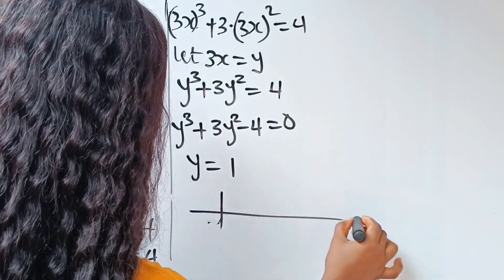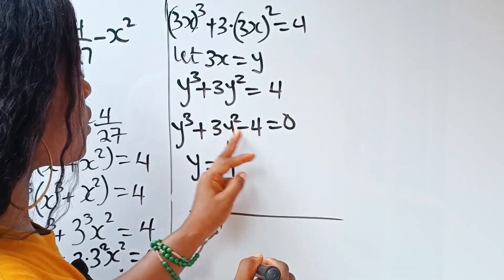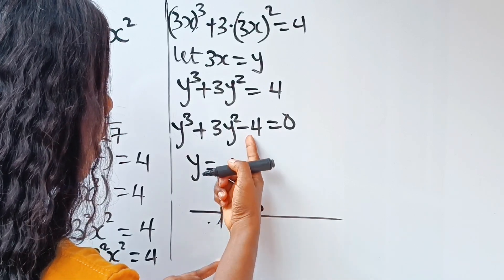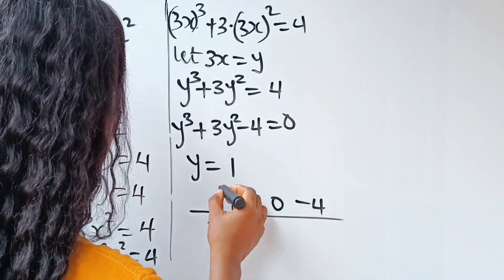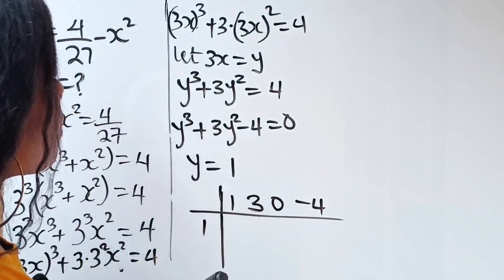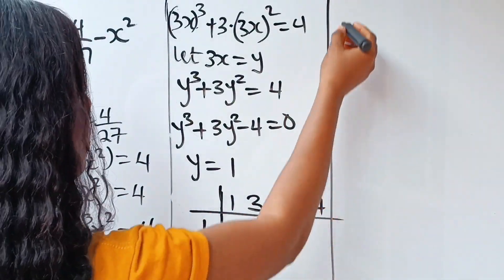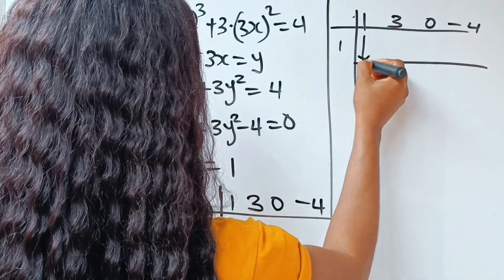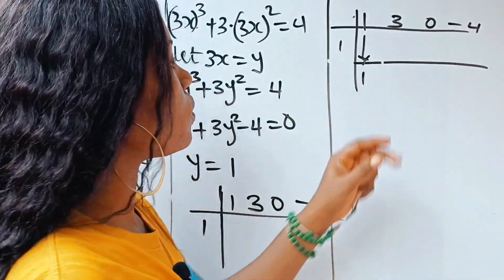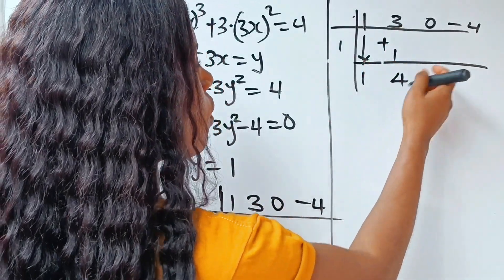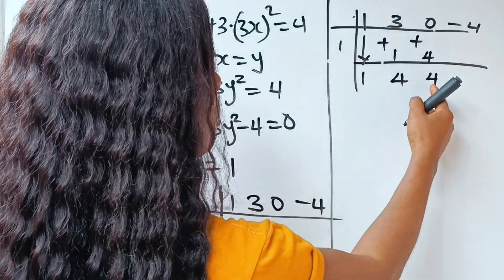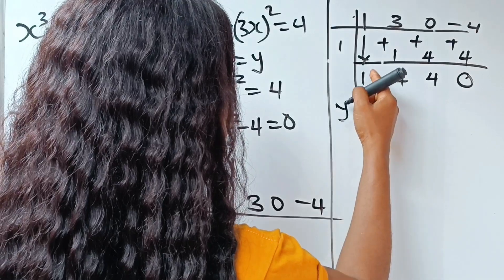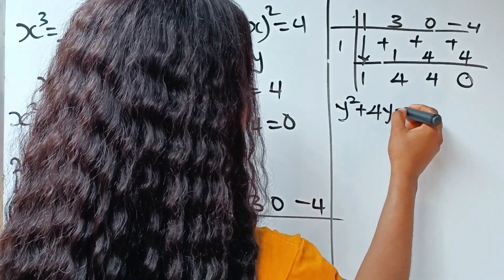So we bring out the coefficients of this polynomial. The coefficients are 1 and 3. Since the y term is not there, its coefficient is 0, and the constant is minus 4. We divide through by 1. We bring down the 1; 1 times 1 gives us 1; 3 plus 1 is 4; 1 times 4 gives 4; 0 plus 4 is 4; 1 times 4 gives 4; minus 4 plus 4 gives 0. So the quadratic equation is y squared plus 4y plus 4 is equal to 0.